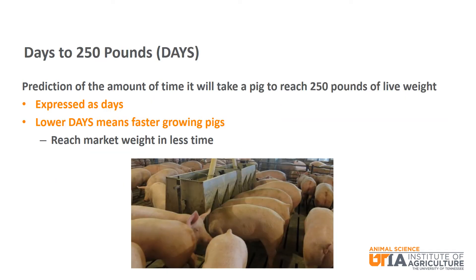Days to 250, or Days, is a prediction of the amount of time it will take a pig to reach 250 pounds of live weight. Days is expressed as days. This one can be confusing, but generally speaking a lower Days EPD is more advantageous. A lower Days to 250 means it will take fewer days to reach 250 pounds, resulting in faster growing offspring — less days to 250 pounds equals faster growing.